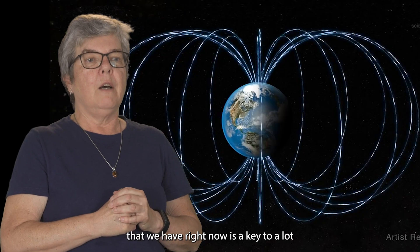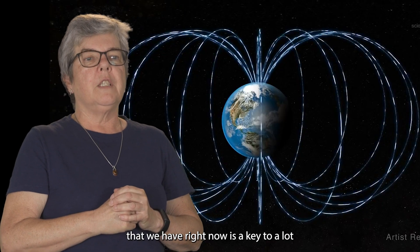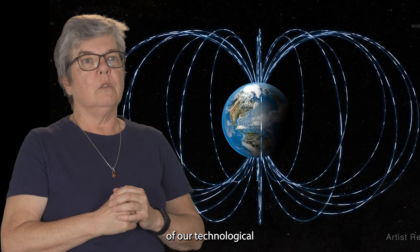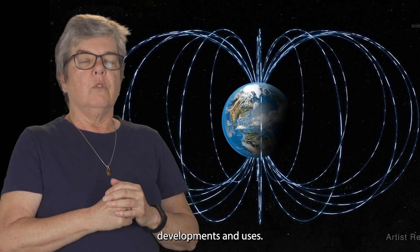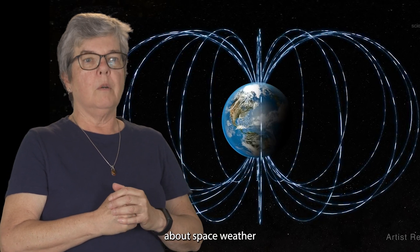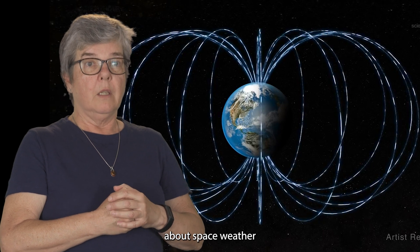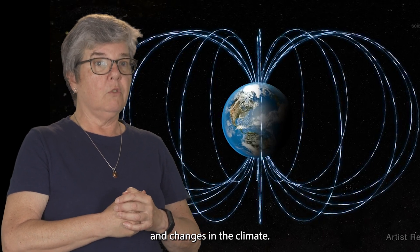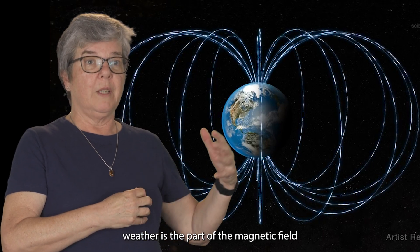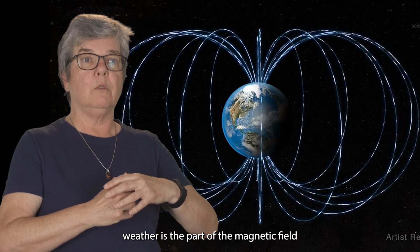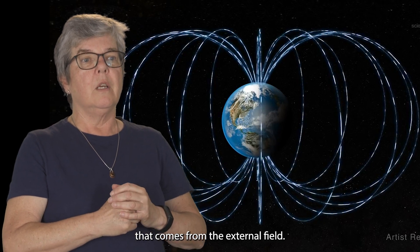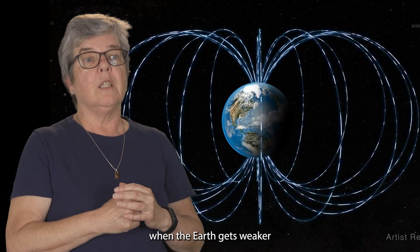The high field strength that we have right now is a key to a lot of our technological developments and uses. So there's a lot of concern about space weather and changes in the climate. Those are due to space weather, the part of the magnetic field that comes from the external field. And what will happen when the Earth gets weaker? We'll have to build new resistance to that into our technological uses in the environment.